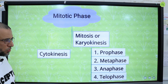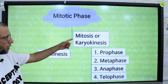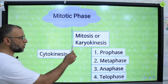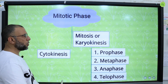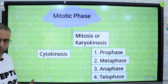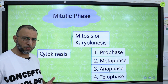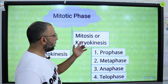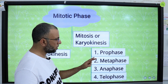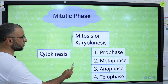The mitotic phase consists of 2 stages: mitosis and cytokinesis. Mitosis is also known as karyokinesis, in which division of the nucleus takes place, and in cytokinesis, division of the cytoplasm takes place. Mitosis itself consists of prophase, metaphase, anaphase, and telophase.